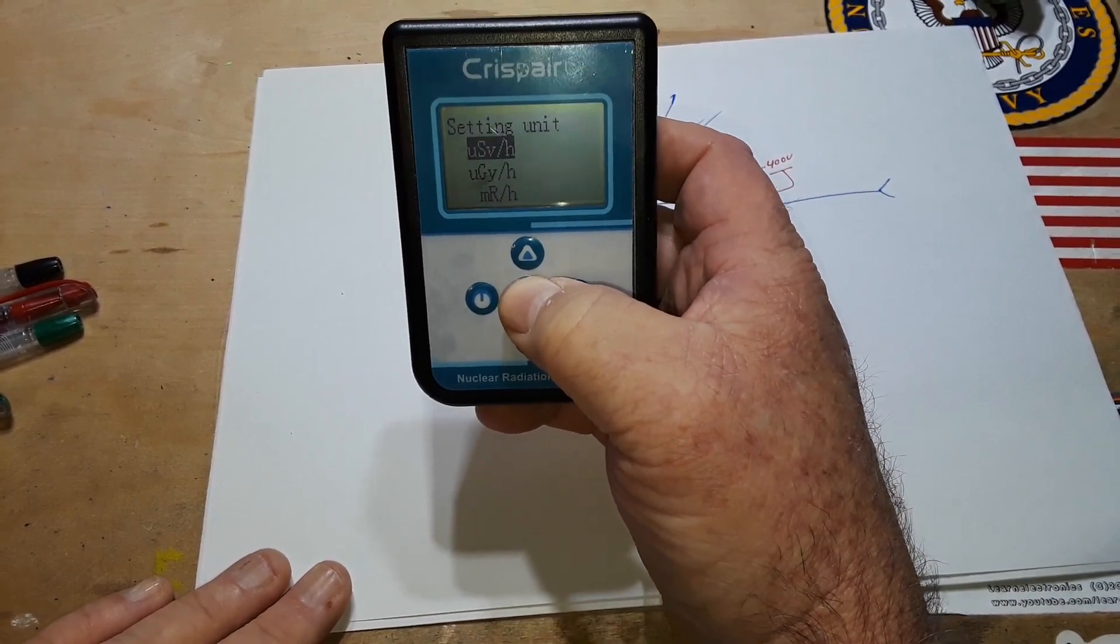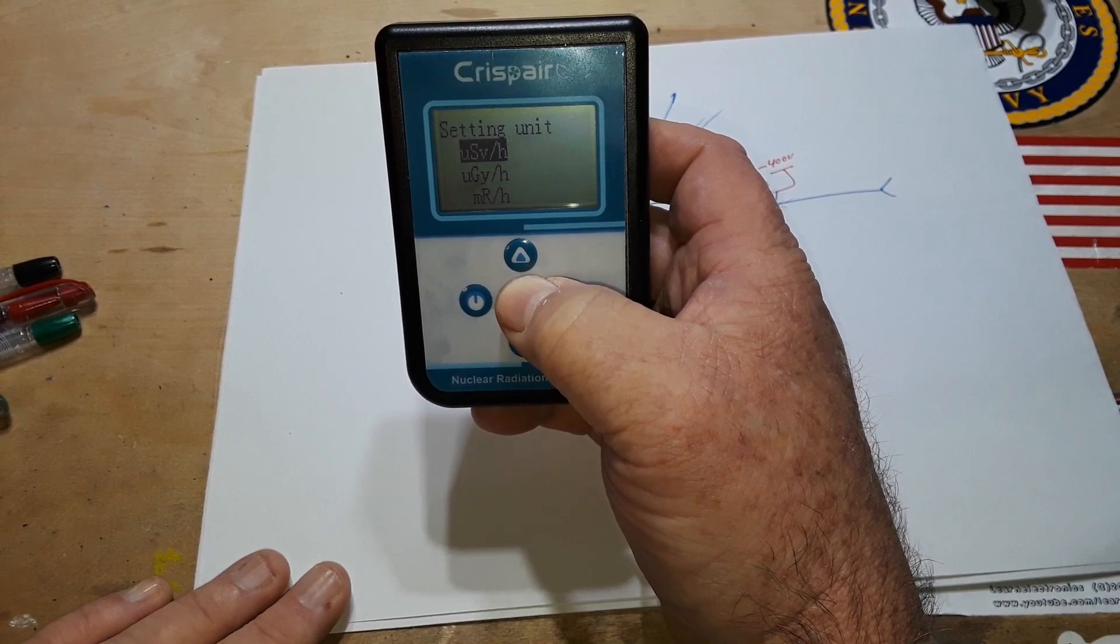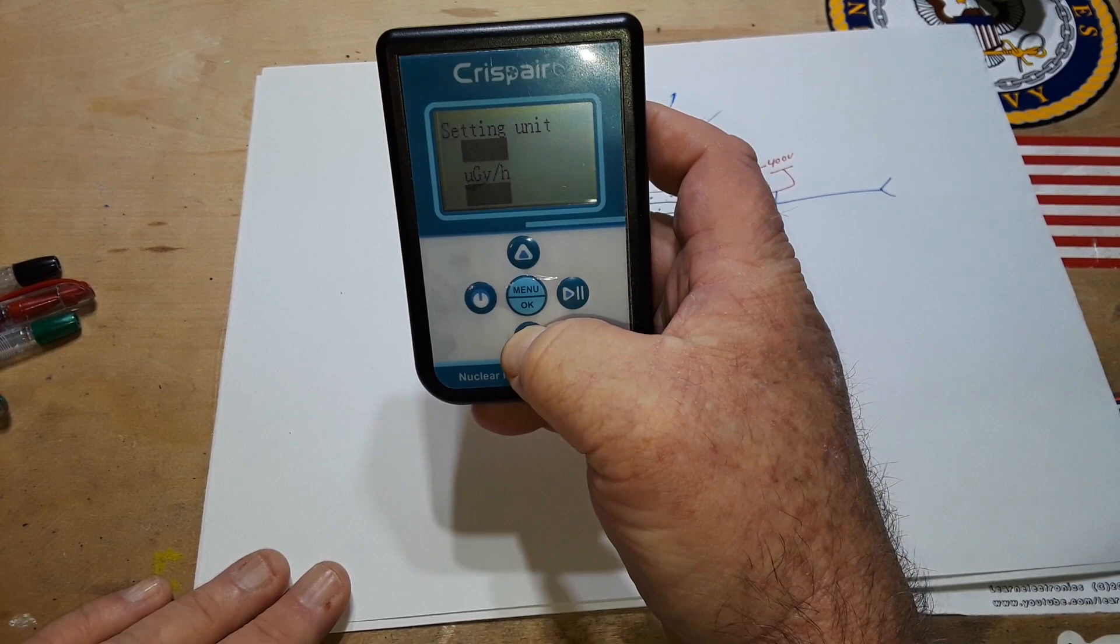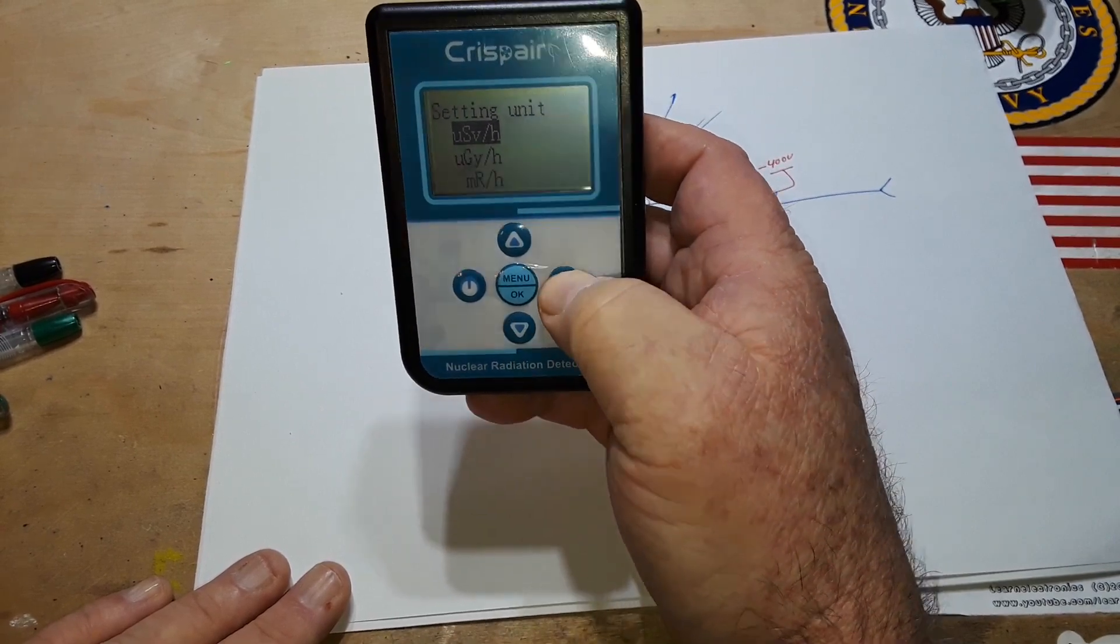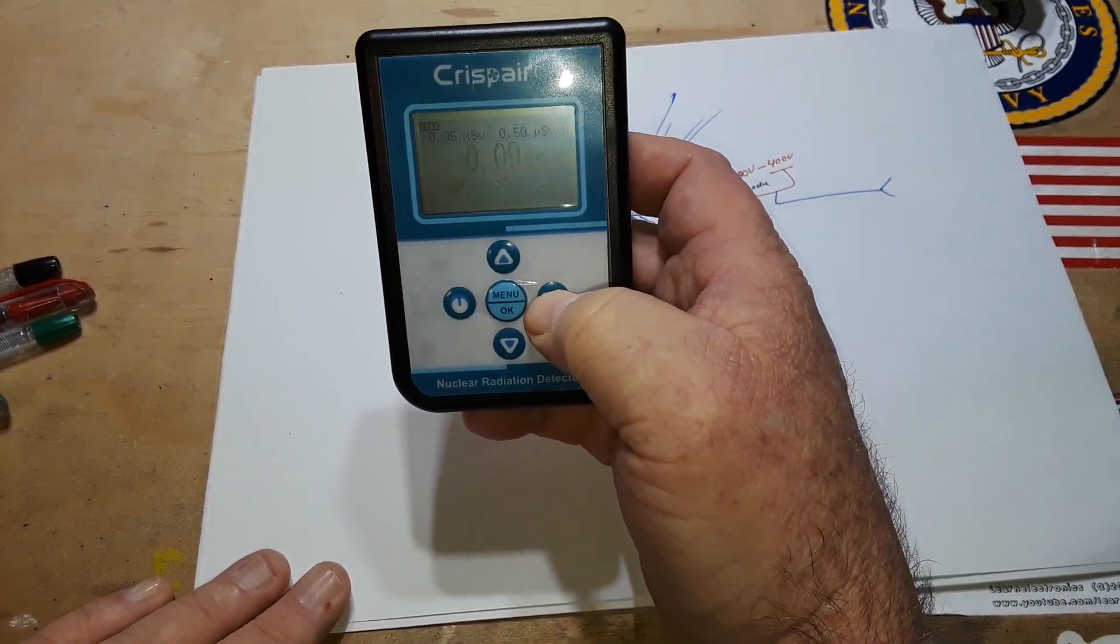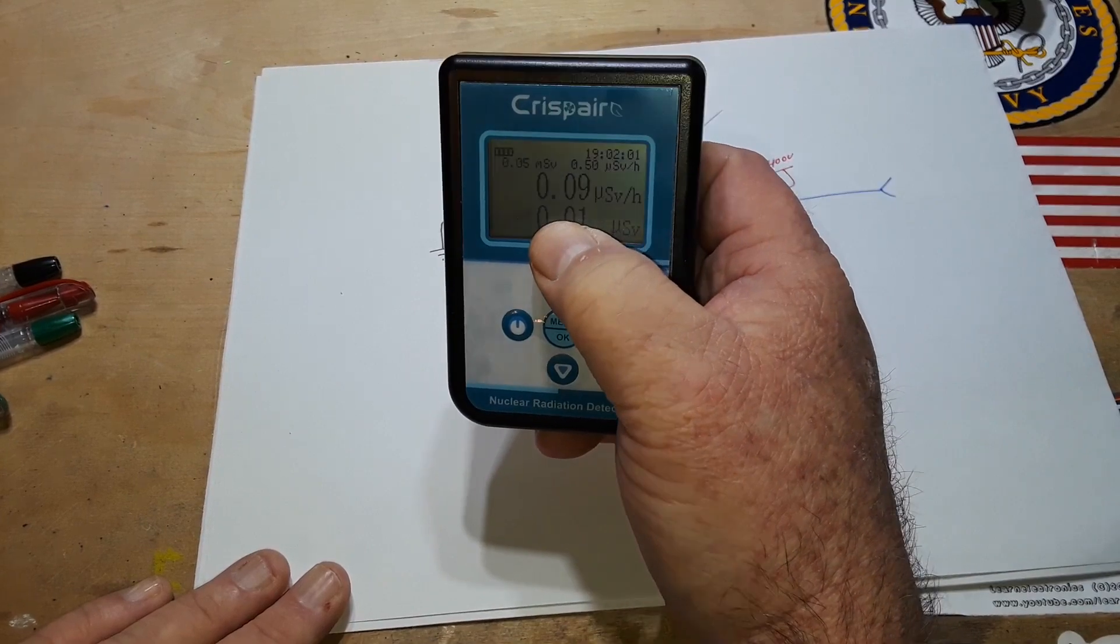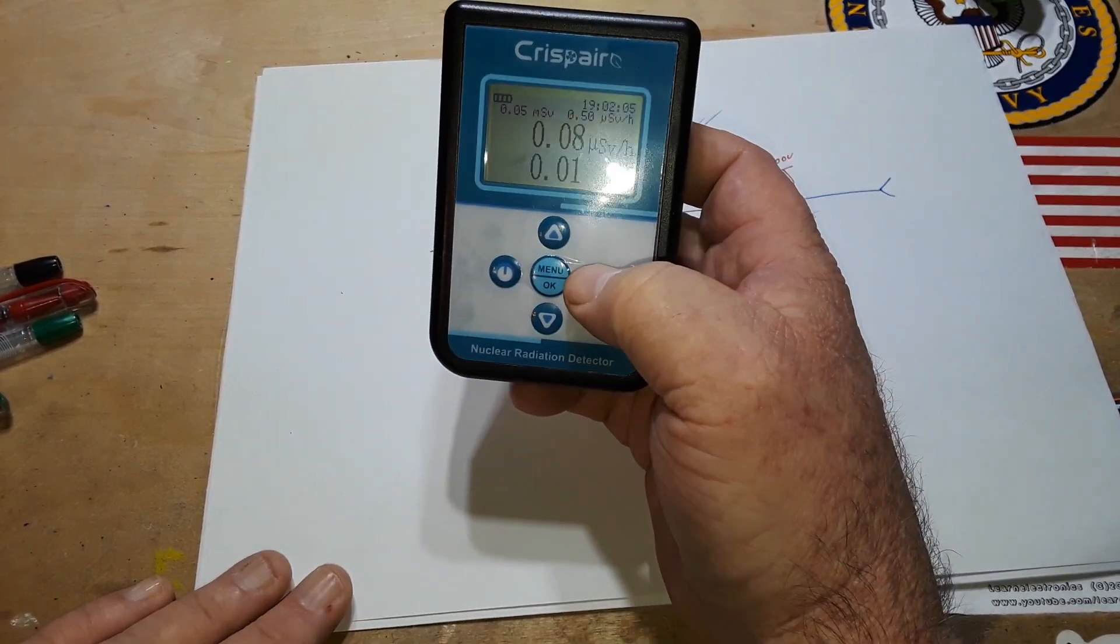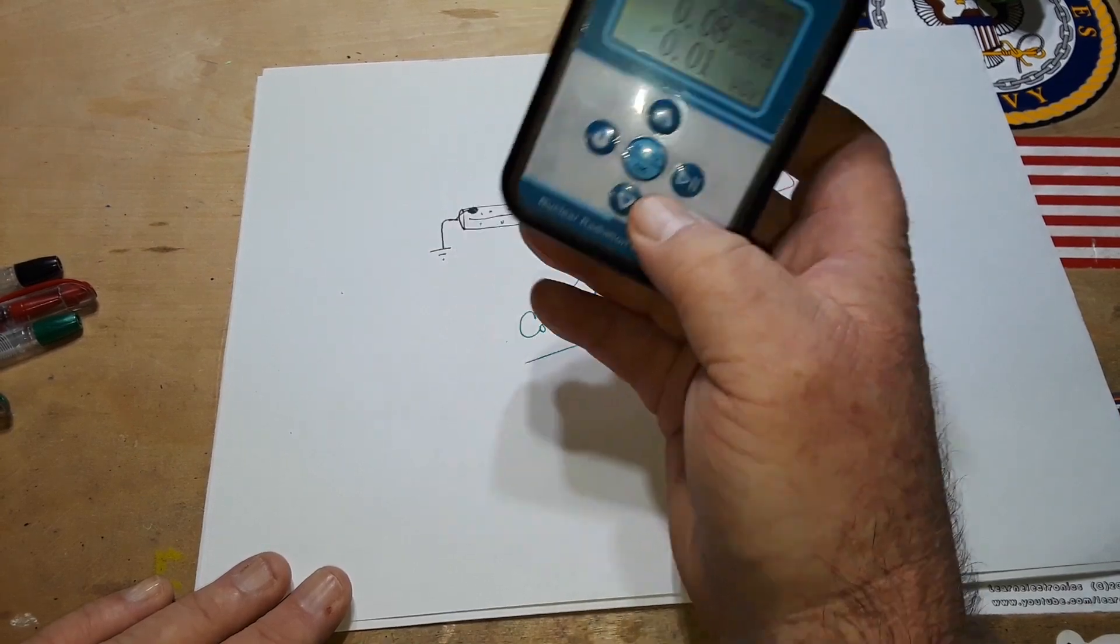Okay, yeah. Micro-sieverts, micro-rads, and micro... Guy, I don't know what that is. I'm not a nuclear physicist. Micro-sieverts is usually what most people look at. But you can see our background radiation here is 0.08 micro-sieverts. And, yeah, basically nothing. All right, guys.